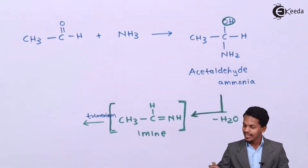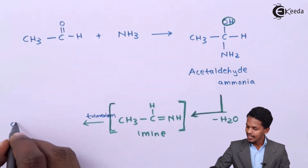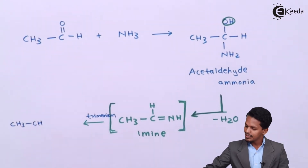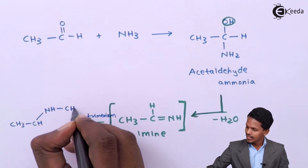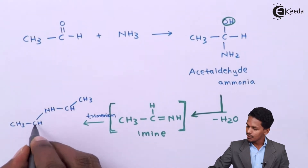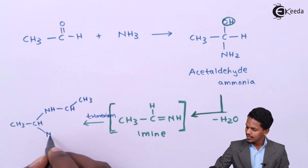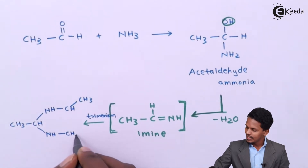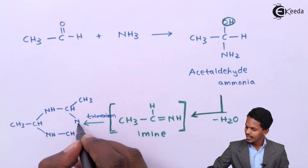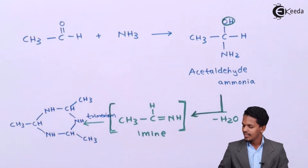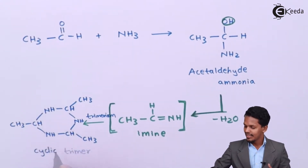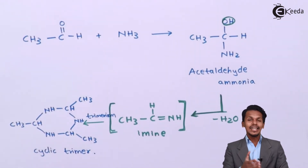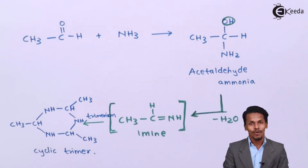Through trimerism, the imine undergoes reaction to form a cyclic product. The structure consists of alternating CH-CH3 and NH units in a cyclic arrangement — this product is basically known as a cyclic trimer.